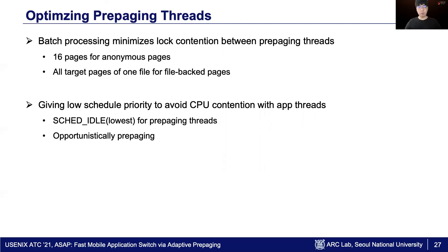We use 16 anonymous pages as a batch, and we use all target pages of one file as a batch. Pre-paging threads should not incur CPU contention with application threads. To do so, we give SCHED_IDLE priority to pre-paging threads so that they use the CPU opportunistically.